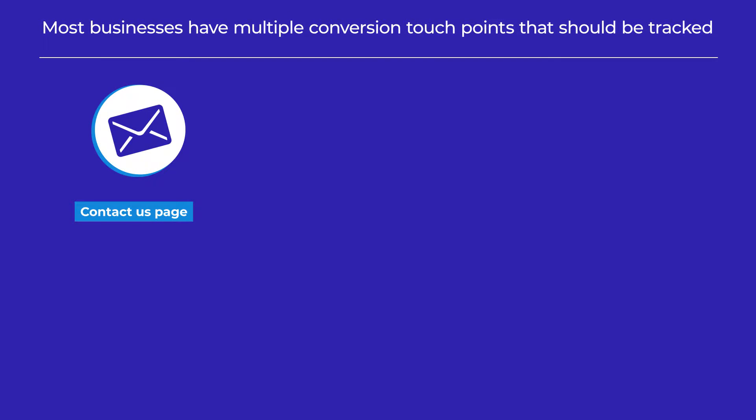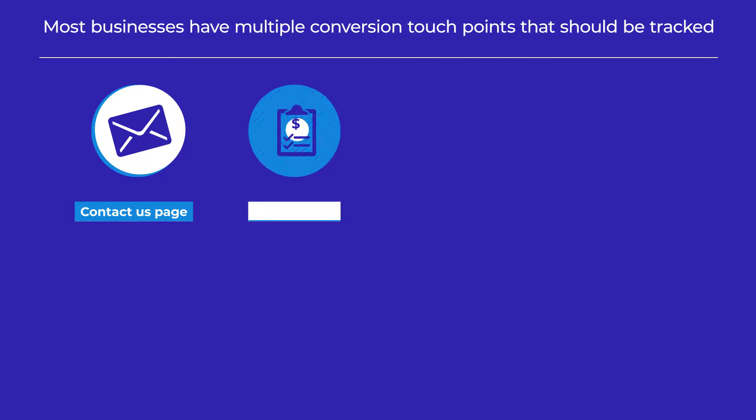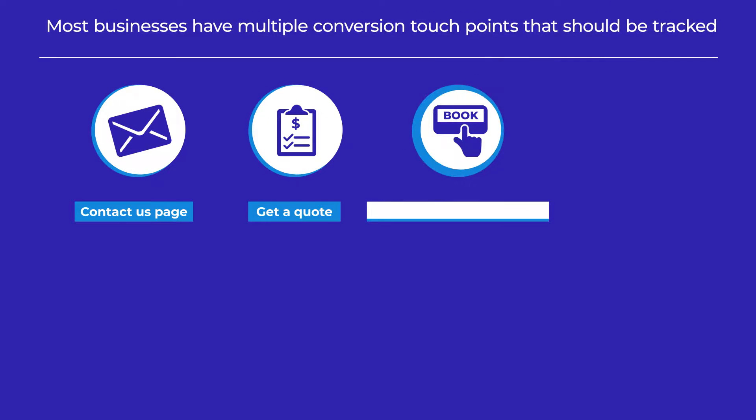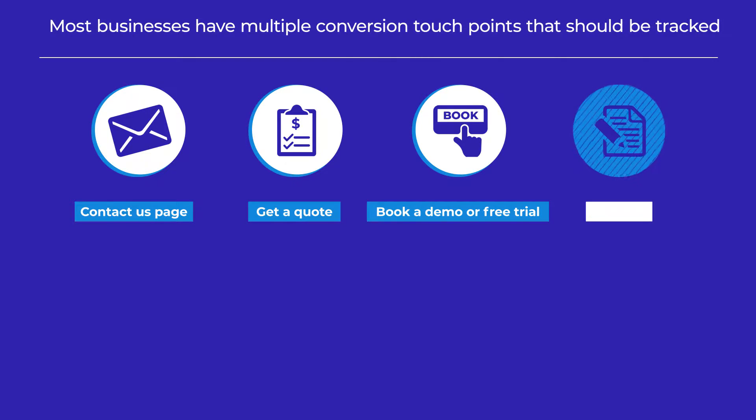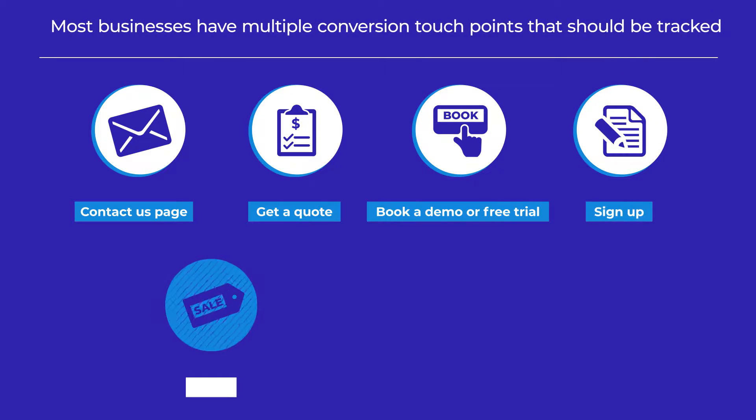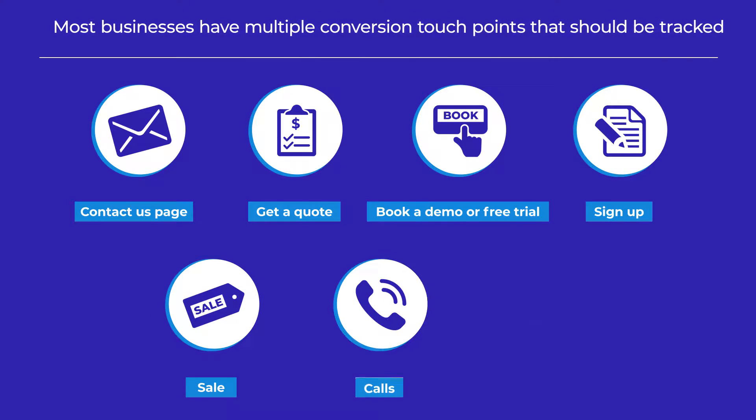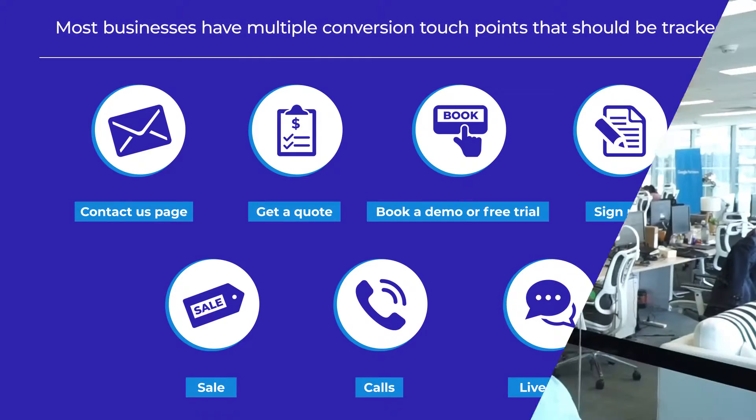For example: contact us page, get a quote, book a demo or free trial, sign up, sale, calls, live chat. You might also have different conversion types for different services that are worth different amounts to your business. And to further add to the list, you might also track softer conversions such as opt-ins, downloads, or video views.